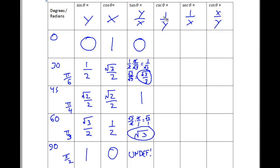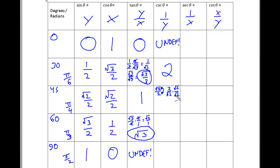Now we're going to look at flipping the sine values because this gives us the cosecant. 0 flipped on its head is undefined — 0 over 1 flipped is 1 over 0, undefined. 1 half flipped on its head is 2. Square root of 2 over 2 flipped gives us 2 over square root of 2. Multiply top and bottom by square root of 2 over square root of 2 to rationalize. This gives square root of 2 over square root of 4, so the answer is square root of 2.